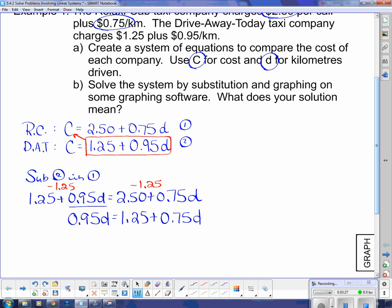Now on this side of the equation, I'm going to make that the home of the constant, which means I have to get rid of the variable. So I'll subtract 0.75d. And on this side, I have to subtract 0.75d.